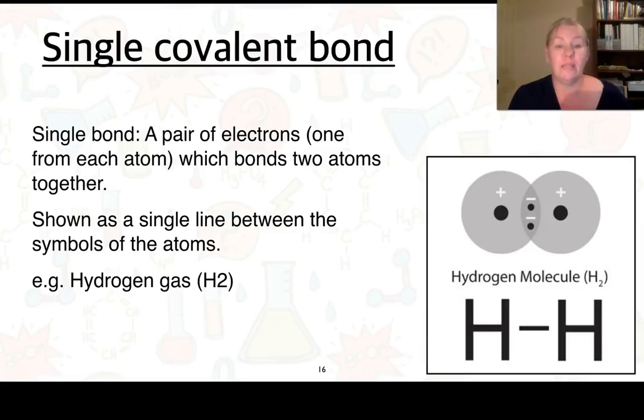So before you could see where I was drawing them, I was drawing a little ring around where the electrons were being shared. That can then also be denoted as a line. So here we have two electrons in each of our hydrogen atoms. And when they are put together, that gives two in the valence shell. It's shown as a single line between the atoms.